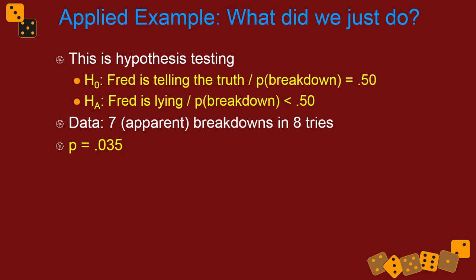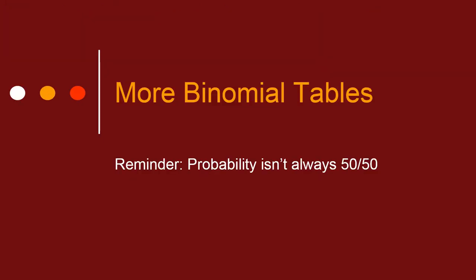So if you set your alpha at 0.05, then you would reject the null hypothesis, and you would say, pretty sure, Fred, you're lying to me. So that's how we use probability distributions to answer questions in statistics. That was just a very straightforward walkthrough of what happens when we use statistical processes to answer these kinds of questions using distributions. We're always using these distributions. We're going to talk about distributions for the whole rest of the semester.